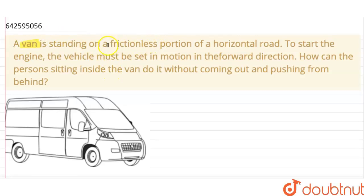A van is standing on a frictionless portion of a horizontal road. To start the engine, the vehicle must be set in motion in the forward direction. How can a person sitting inside the van do it without coming out and pushing from behind? Okay, so this is the van and it is set on a frictionless portion of a horizontal road.